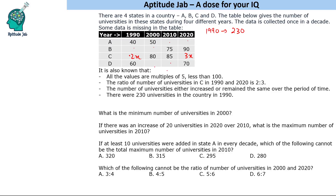Based on the condition that values are multiples of 5 less than 100 and the ratio is 2:3, the only possibility is 60 and 90. So C in 1990 is 60 and C in 2020 is 90. Since the total in 1990 is 230 and the known values sum to 160, the remaining state A in 1990 is 70. These three values we can fill from the given statements.